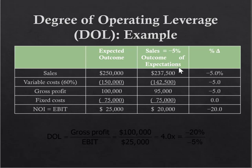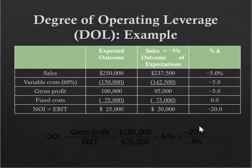In the example: expected sales of $250,000, variable cost of 60%, gross profit of $100,000, fixed costs of $75,000, so EBIT equals $25,000. If sales go down by 5% to $237,500, variable costs drop by the same percentage, gross profit falls to $95,000, but fixed costs remain at $75,000, so net operating income drops to $20,000 — a 20% decrease. DOL equals gross profit over EBIT: $100,000 divided by $25,000 equals 4x.